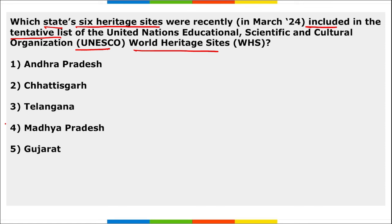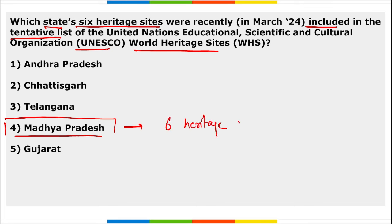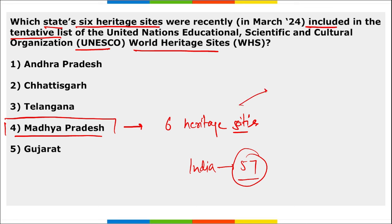Six heritage sites of Madhya Pradesh were recently added to the tentative list of UNESCO World Heritage Sites. India now has a total of 57 sites in UNESCO's tentative list. The six sites include Gwalior Fort, Khuni Bhandara, Bhojeshwar Mahadev Temple, Rock Art Sites of Chambal Valley, Historic Emblems of Dhamnar, and Gond Monuments of Ramnagar.